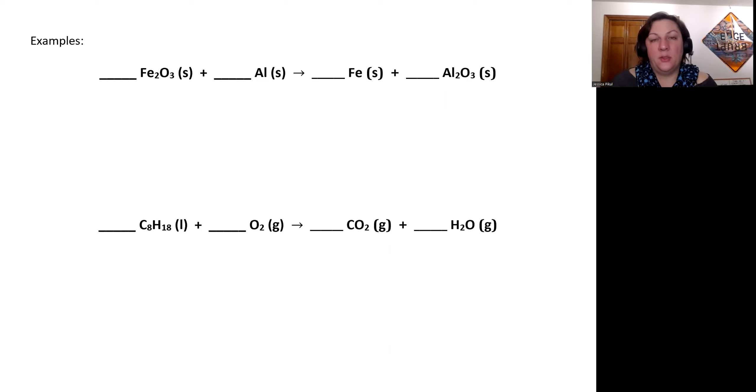All right, I'm going to walk through a couple of example problems for balancing chemical equations. We're going to start with the thermite reaction that we already discussed, the formatting of the chemical equation. And we're going to now balance it so the atoms are equal on the reactants and the product side for each of the elements.